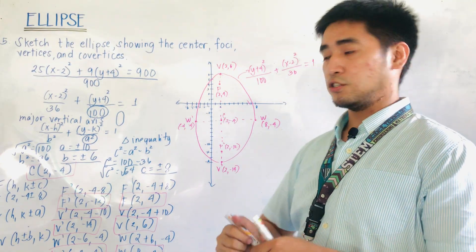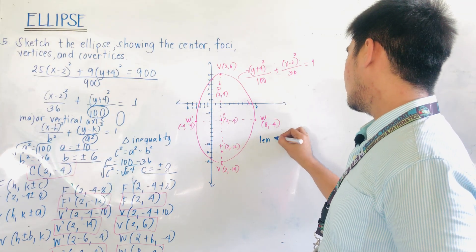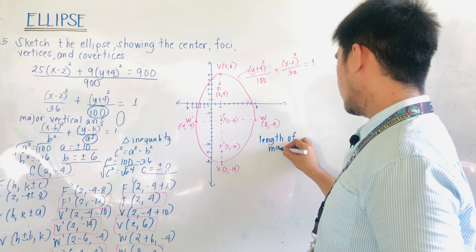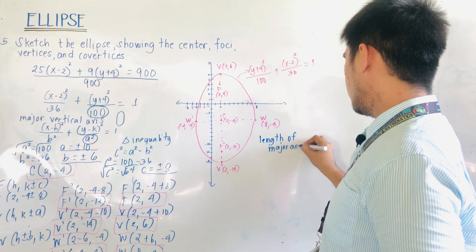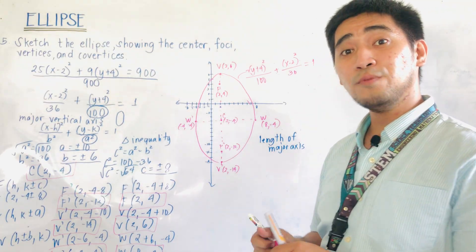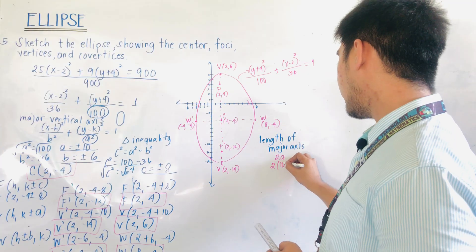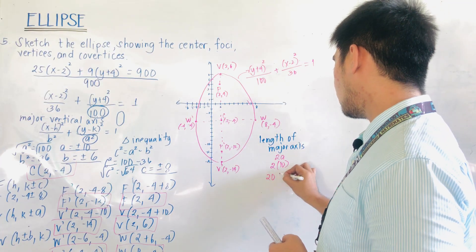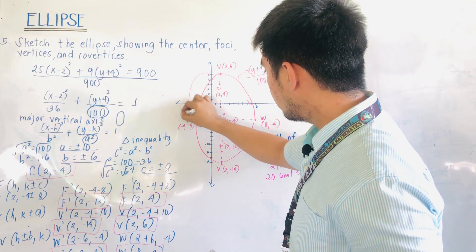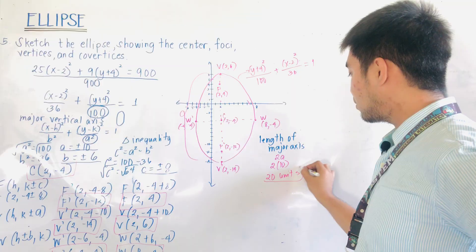A follow-up question: what is the length of the major axis? The length of the major axis is always 2a, which is 2 times 10, equaling 20 units. This spans from V at y = 6 down to V prime at y = −14, confirming a length of 20 units.